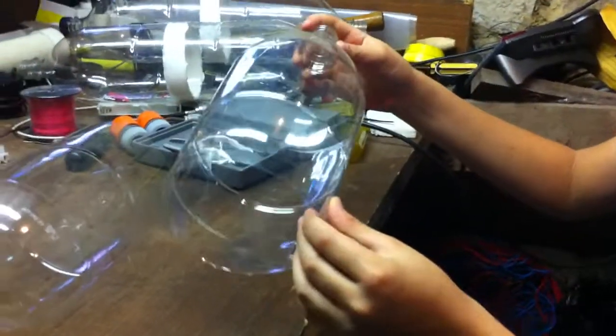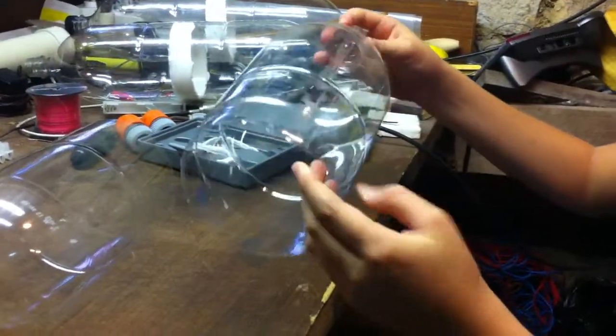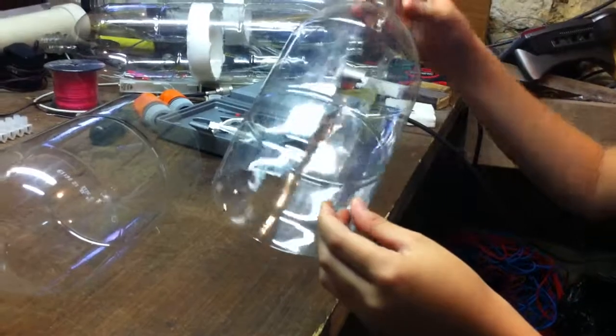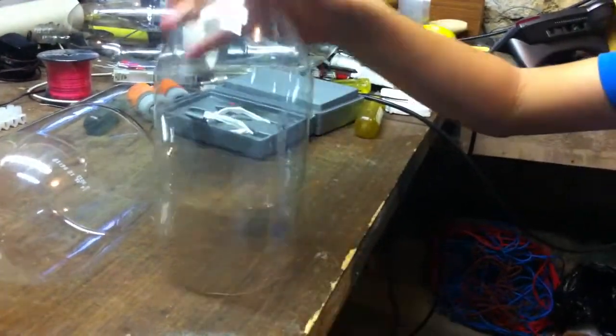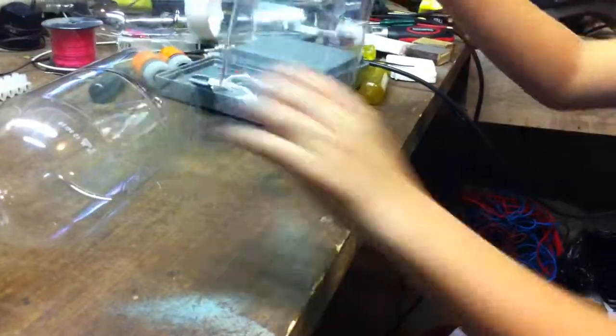You do this by filling a saucepan or pot with about three centimeters water, heat it to 75 degrees and hold it flat up against the base for about three seconds and you test fit it.